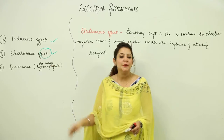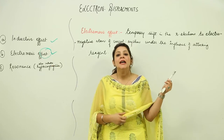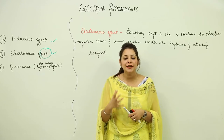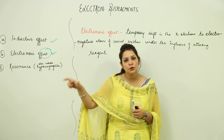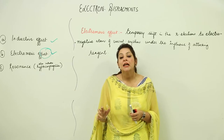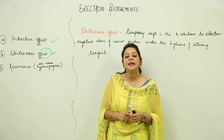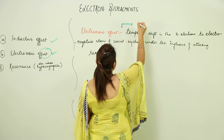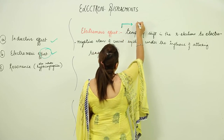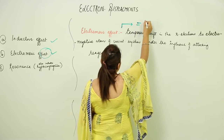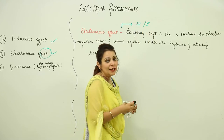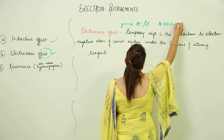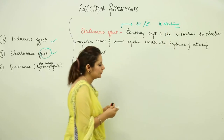Coming on to the electromeric effect. Like the inductive effect has a condition — that there should be an electronegative element attached to the chain — the condition for an electromeric effect is that it occurs in an organic compound which contains at least one double bond or triple bond. That means it should have pi electrons in it.